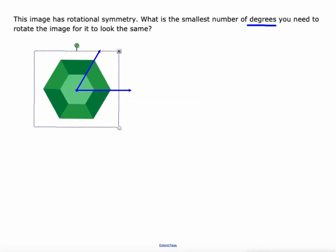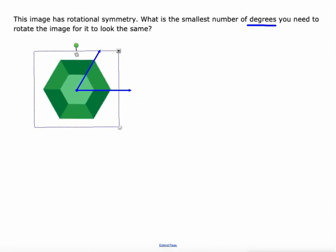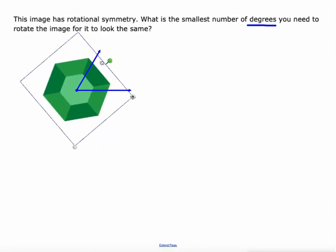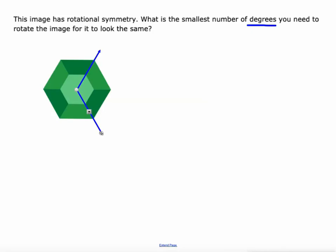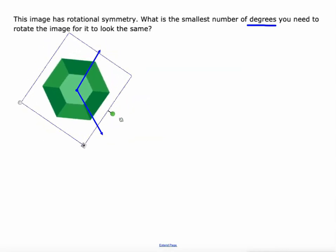So if I rotate it around that much, does it look the same? I don't think so because we used to have dark green on top and now we have light green on top. So I'm going to reset this, grab this line. I think this is the rotation right here. So that's one. Now we got dark green on top again.